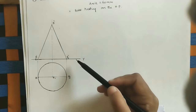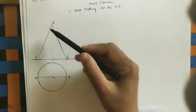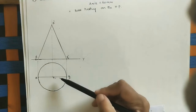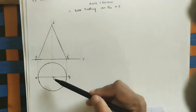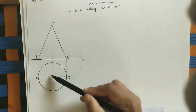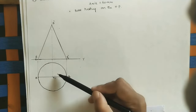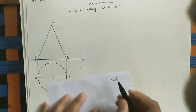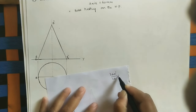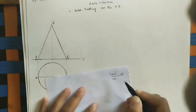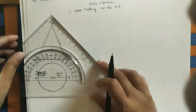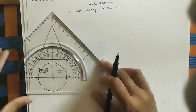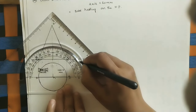From the front view we got only two generators. To get more generators, divide the base circle into equal parts. I am dividing the circle into 12 equal divisions. The angle is 360 degrees; dividing by 12 gives 30 degrees per part. Using a protractor, divide the circle at 30-degree intervals.